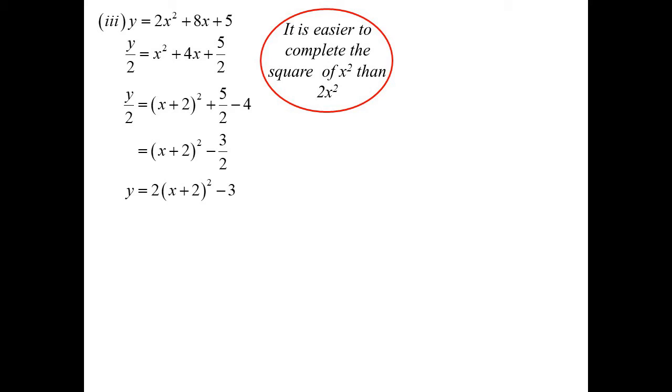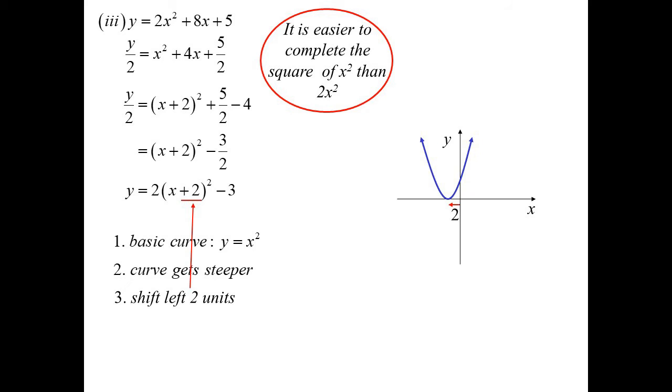Two x squared plus eight x plus five. When I complete the square, I much prefer x squared than two x squared. So I'll divide everything by two. Half the coefficient of x would be two. Tidying that all up, and now you'll notice I've multiplied back by the two. So I can see we've got y equals two x plus two squared minus three. So what have we got? y equals x squared. But actually this will be a bit steeper because we've got two lots of the x squared. Make it a bit steeper. And then we have our horizontal shift two units and our vertical shift three. Vertex being moved to minus two, minus three.